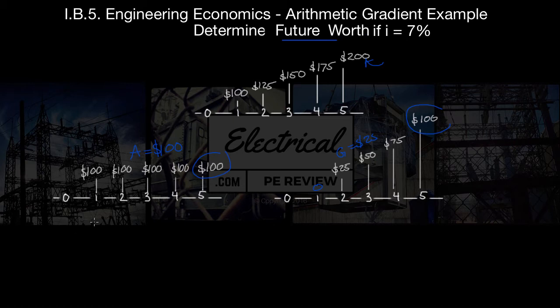So the first one is very simple. We know that our future worth of the original one here will be the sum of the future worth of these two. So the future worth of A uniform series is going to be F equals A times F given A for an interest rate i at period n.